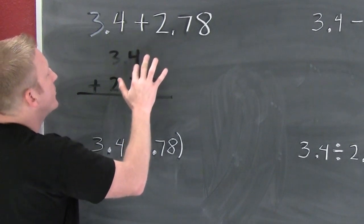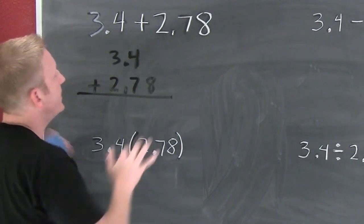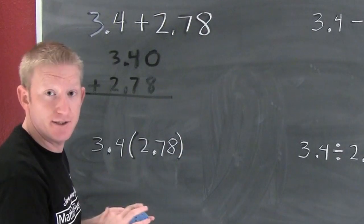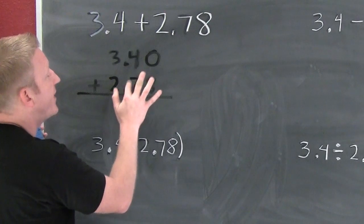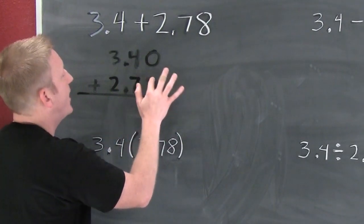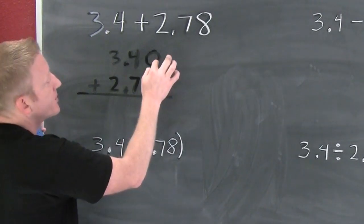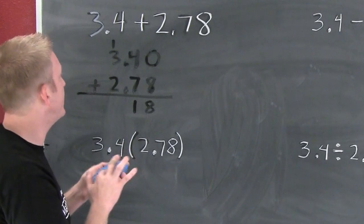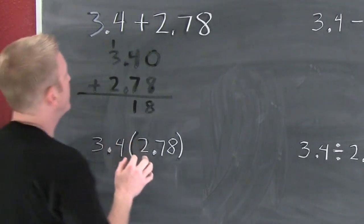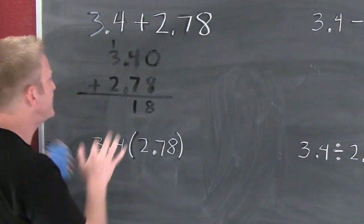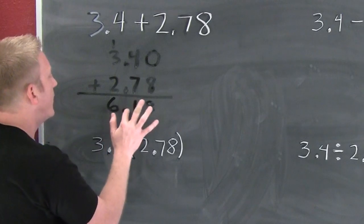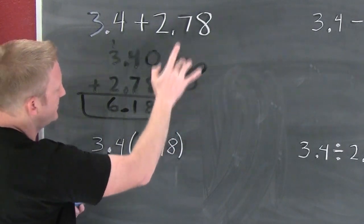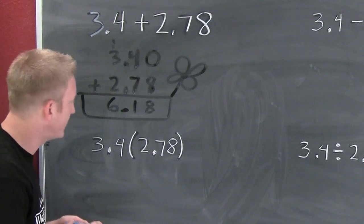I'm going to add them the way I normally do. In order to add them, it's usual convention that we put in these placeholders. I can add a zero to the end of a decimal on the decimal side without changing the value — kind of like back in the 80s when they had the Mustang 5.0, which was not any different than the Mustang 5. So I take that 0 and that 8 and it gets me 8. Then that 4 and that 7 gives me 11, and I carry that one. 3 and 1 is 4 and 2 is 6. Now what do I do with that decimal? I bring it straight on down. So the answer is 6.18.